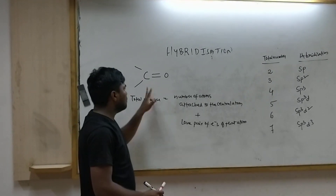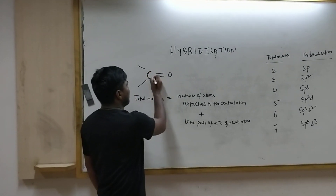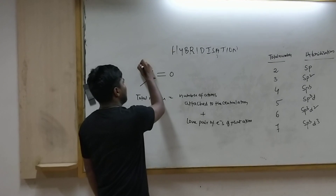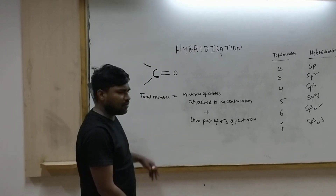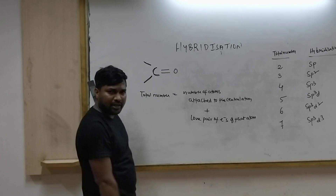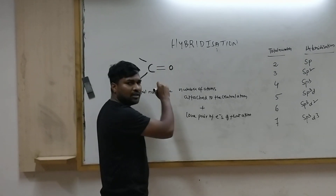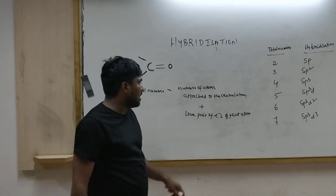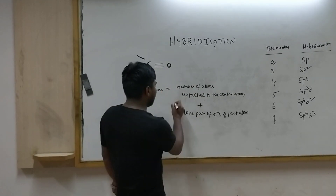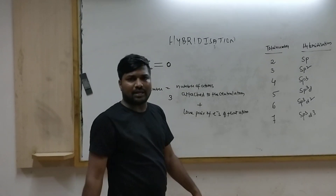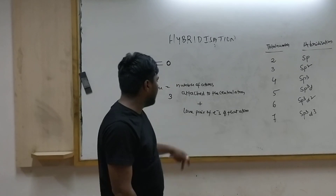How many atoms are attached to this carbon? There is one alkyl group or hydrogen, another alkyl group or hydrogen, and one oxygen. So the total number of atoms attached to this carbon is 3.